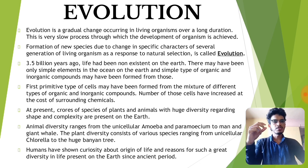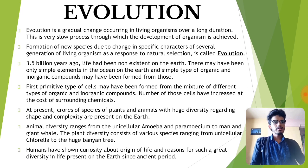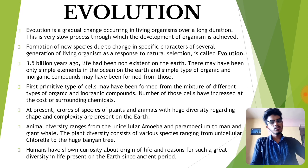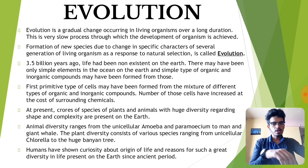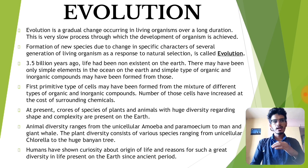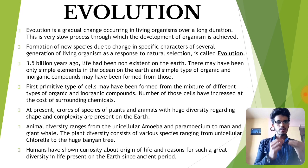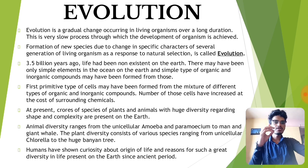To understand evolution with a simple example: an embryo develops into a child, a child into a teenager, and a teenager into an adult. That's how human beings evolve — it doesn't happen overnight. Similarly, the current generation did not appear on Earth suddenly. It took millions — or crores — of years. It took about 300 crore years for evolution to take place.